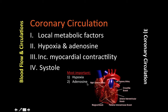So if we have increased myocardial contractility, we compensate by delivering more O2 through the compensatory mechanism of vasodilation of the coronary vessels. Accordingly, both blood flow and O2 delivery to the contracting heart muscles increase. Again, the most important metabolic factors are hypoxia and adenosine.